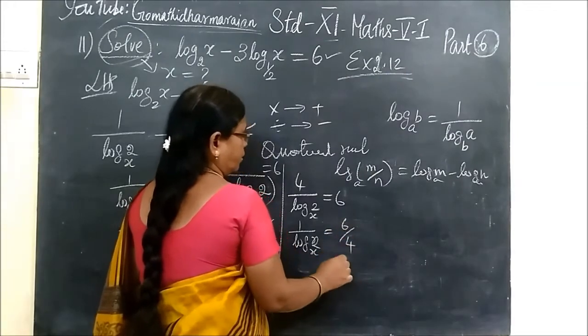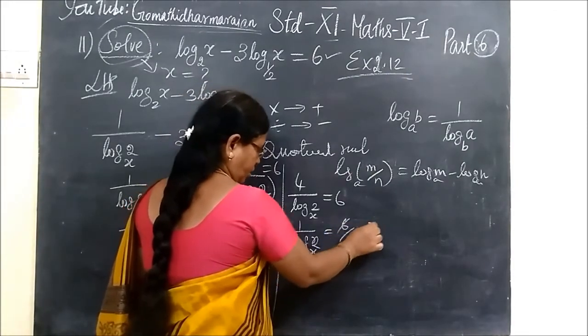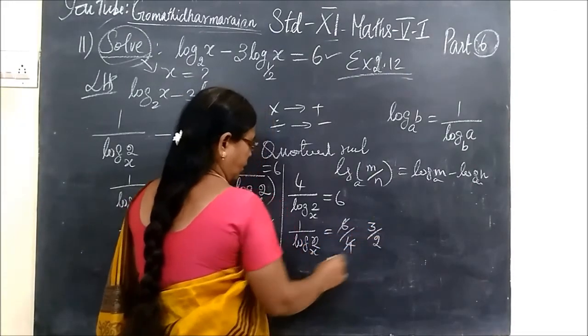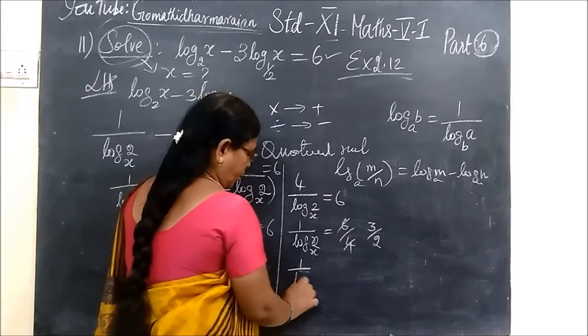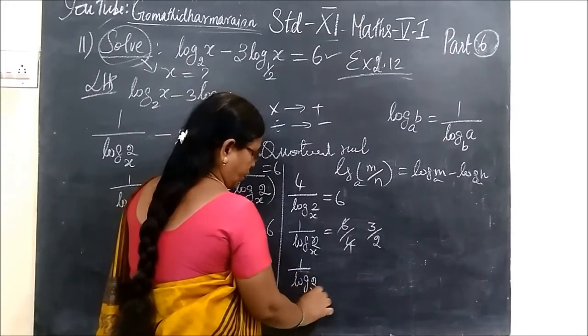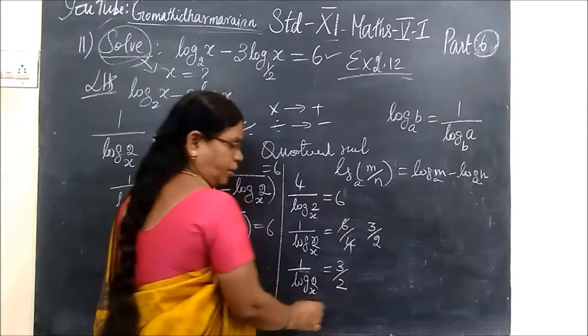So 1 by log 2 to the base x, this is equal to 6 by 4, so if we cancel, you are getting 3 by 2. So 1 by log 2 to the base x, this is equal to 3 by 2.